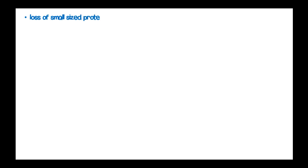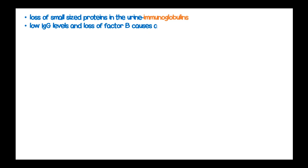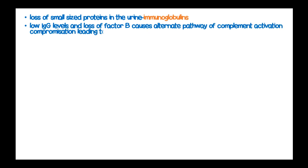Loss of small serum proteins such as immunoglobulins to urine causes lower levels of IgG and loss of factor B, causing the alternate pathway of complement activation to be compromised, which therefore leads to low immunity and susceptibility to infections.